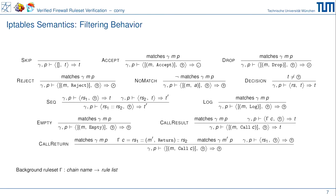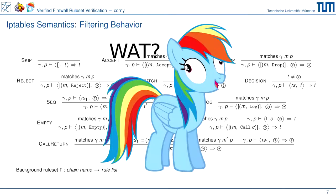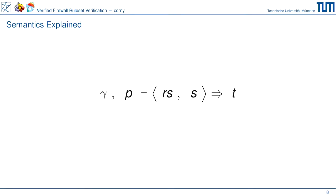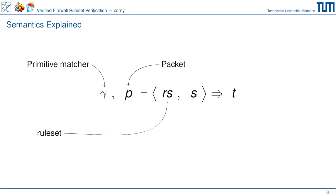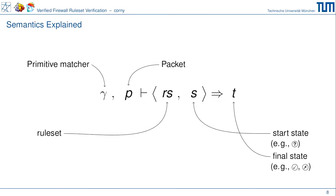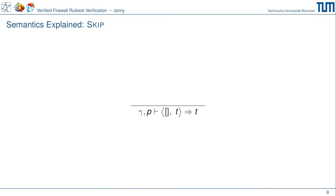Now we have syntax and semantics of match expressions. We only need to specify the filtering behavior of IP tables. So here it is — and yes, this is really everything we need to know about IP tables packet filtering, on one slide. Let's read it: p is the packet the firewall is examining, gamma is our primitive matcher encoding all features IP tables can match on, then we have the rule set — a list of rules. s is the start state — the firewall usually starts undecided — and at the end we have the final state: either accept or drop.